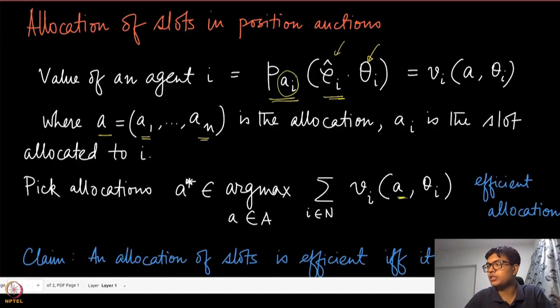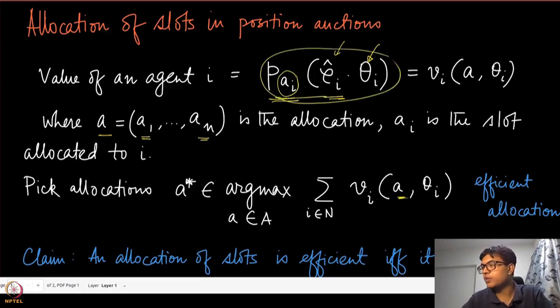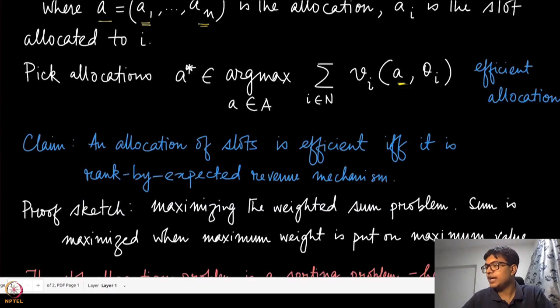We have already seen the expected revenue. Expected revenue is going to be nothing but this total quantity, because this is the probability of getting a click, and whenever that click happens, this agent is going to give this value. If you are sorting them with respect to that expected revenue, then you are going to get an efficient allocation.